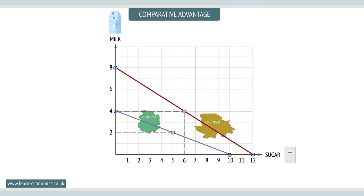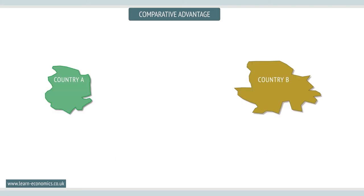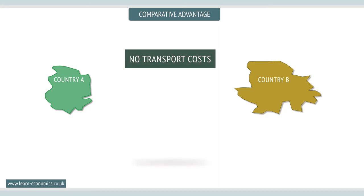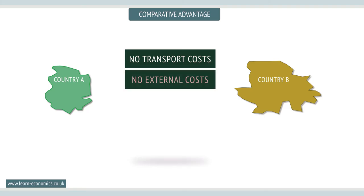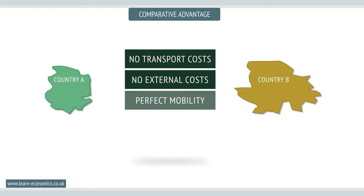However, the principle of comparative advantage ignores the cost of trade, including transport, and any external costs such as air and sea pollution. It also assumes perfect mobility of factors and no diminishing returns — unlikely in practice as there may be barriers to entry for labor and producers.